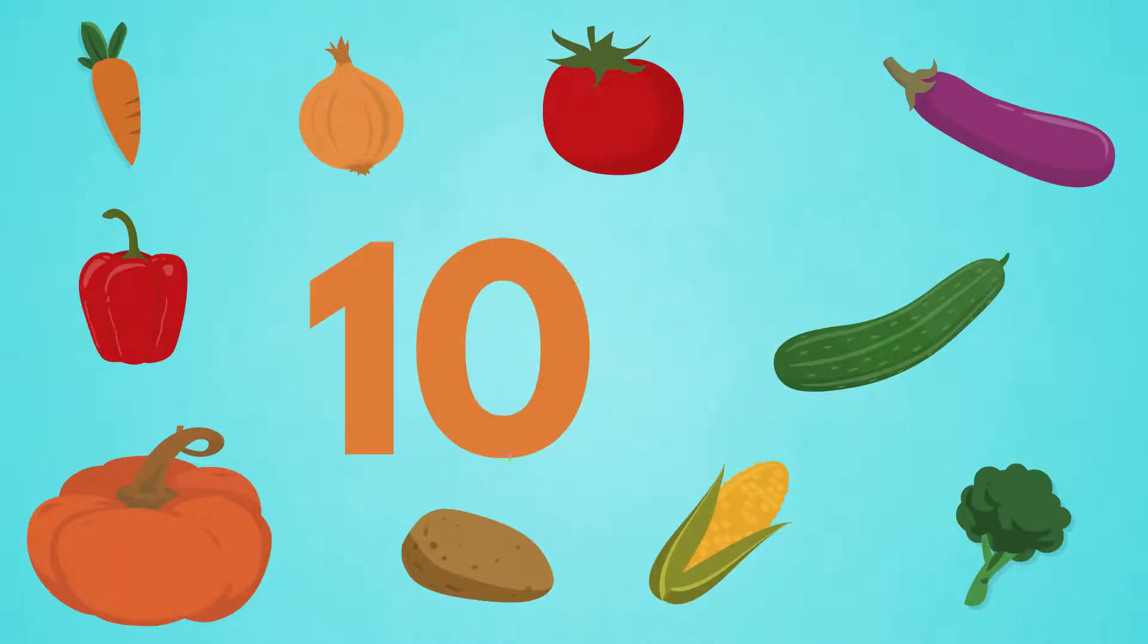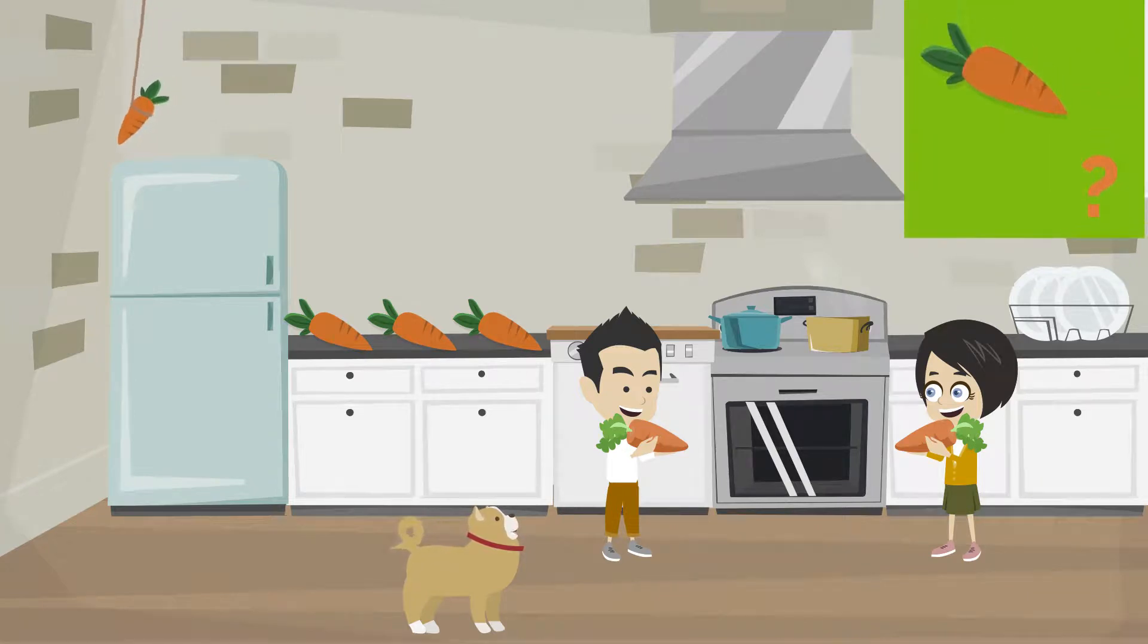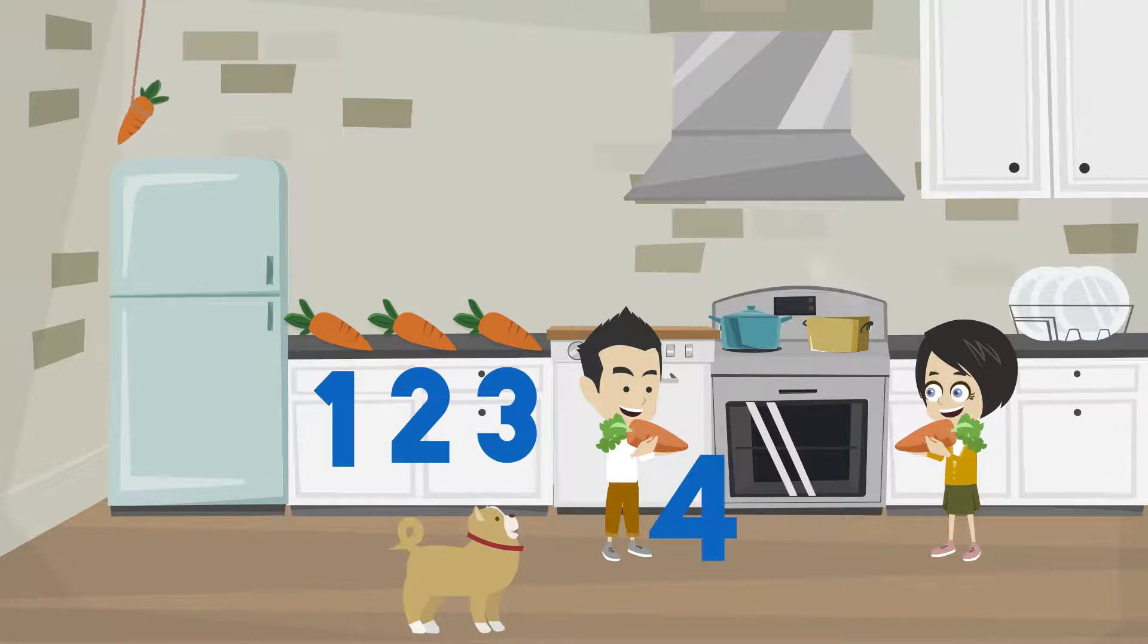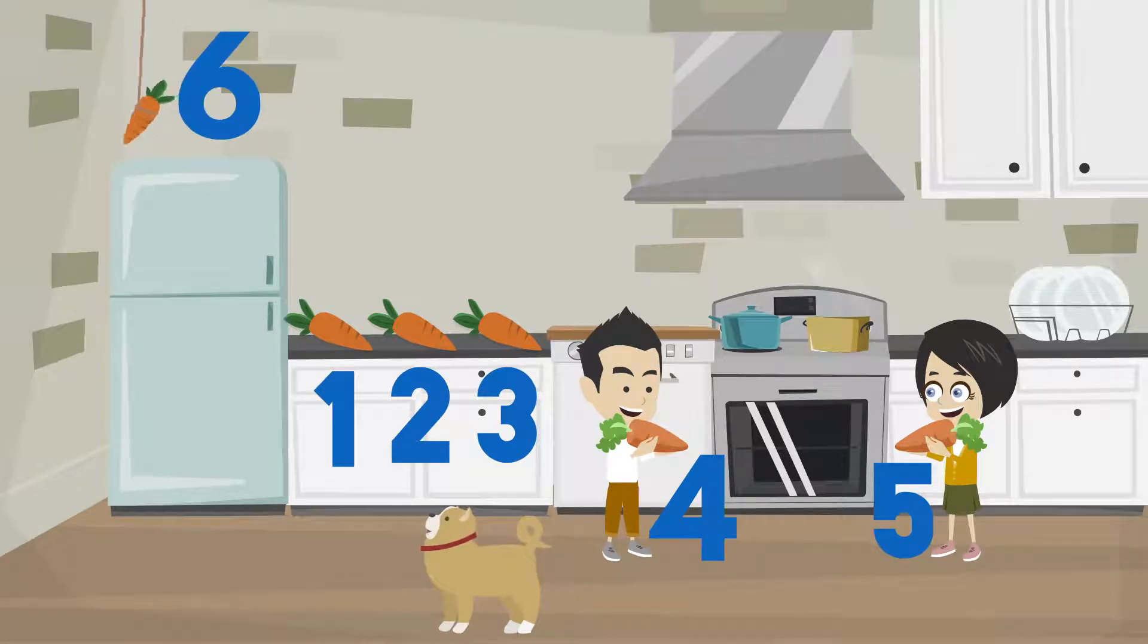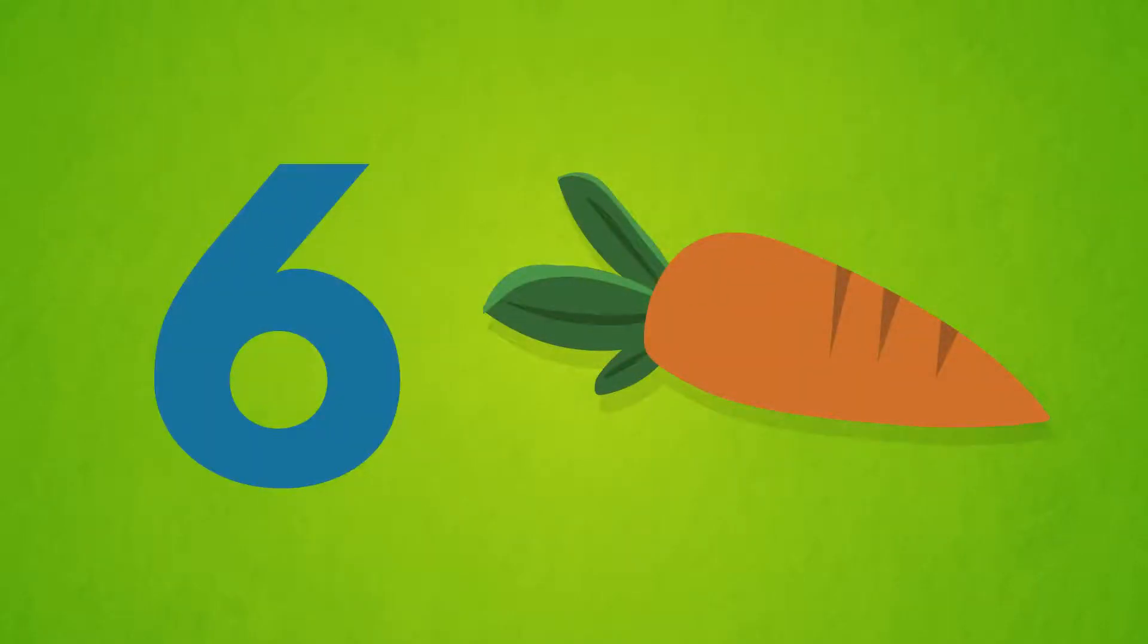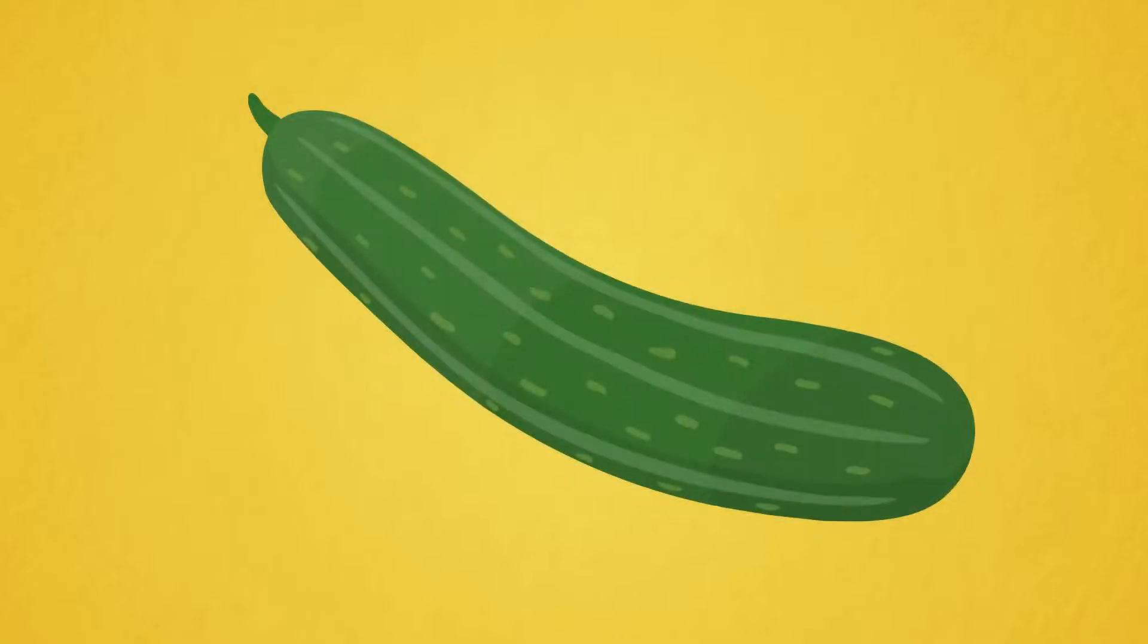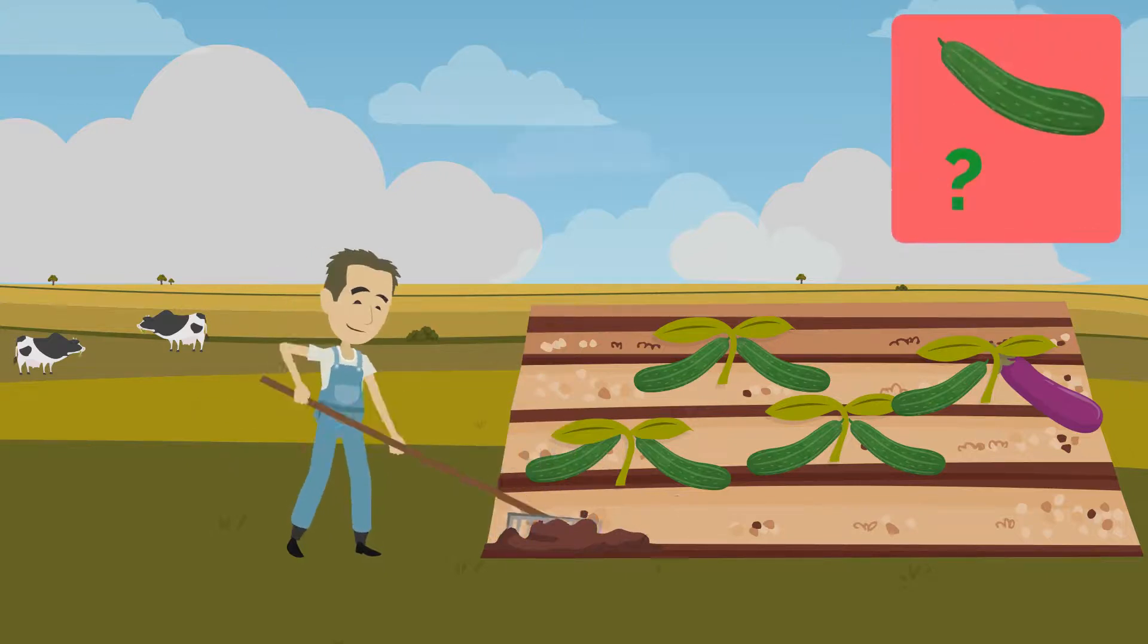10 vegetables, well done! Carrot. How many carrots do you see? 1, 2, 3, 4, 5, 6. 6 carrots, good job! Cucumber. How many cucumbers do you see?